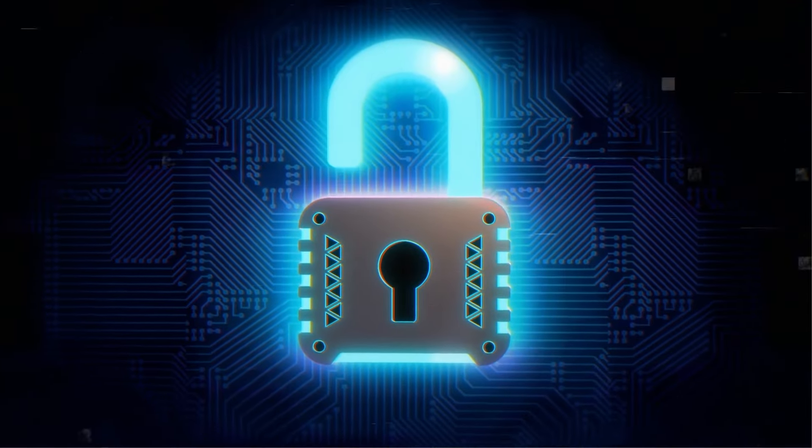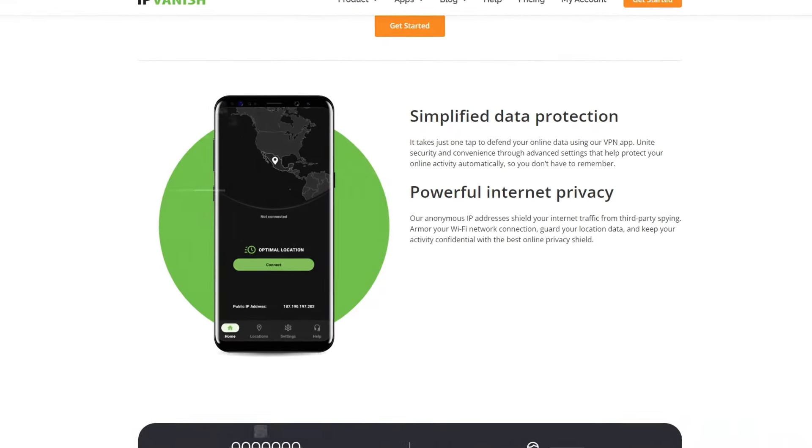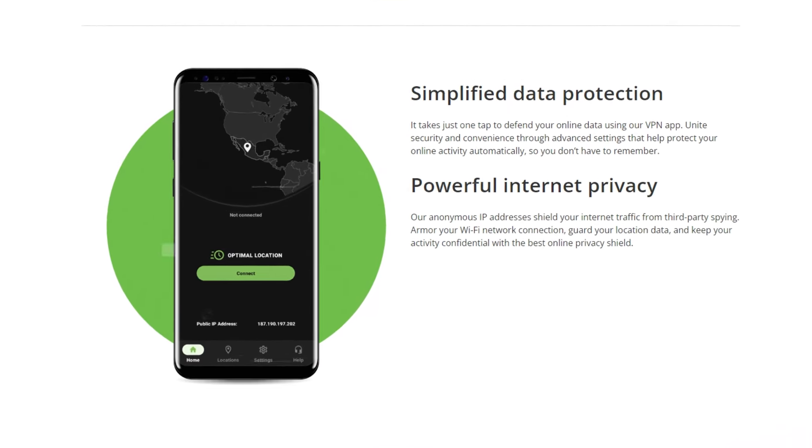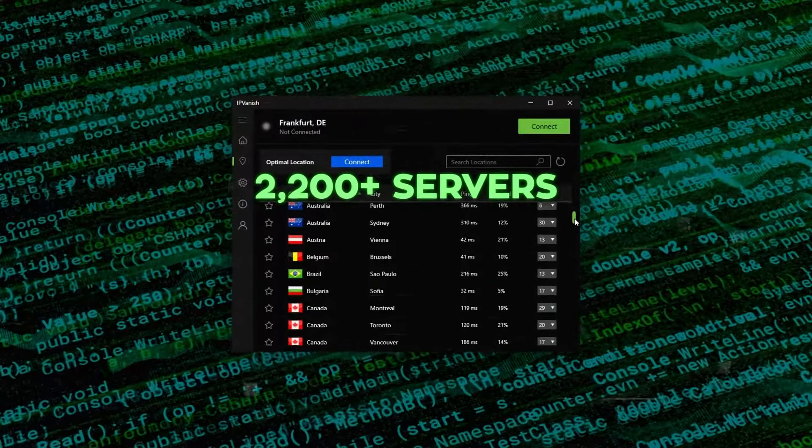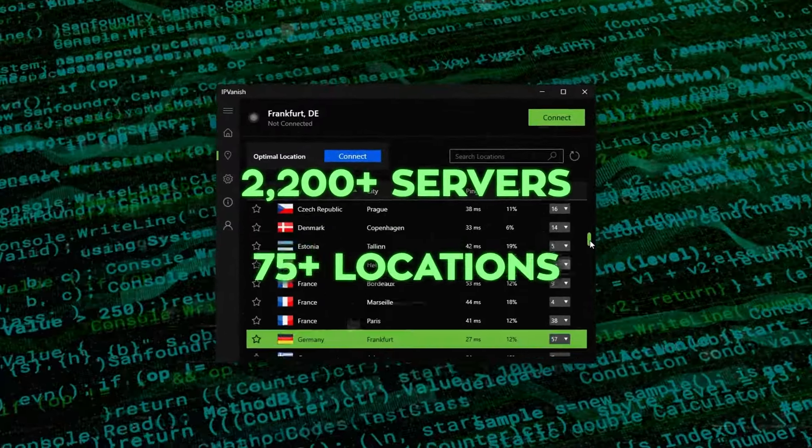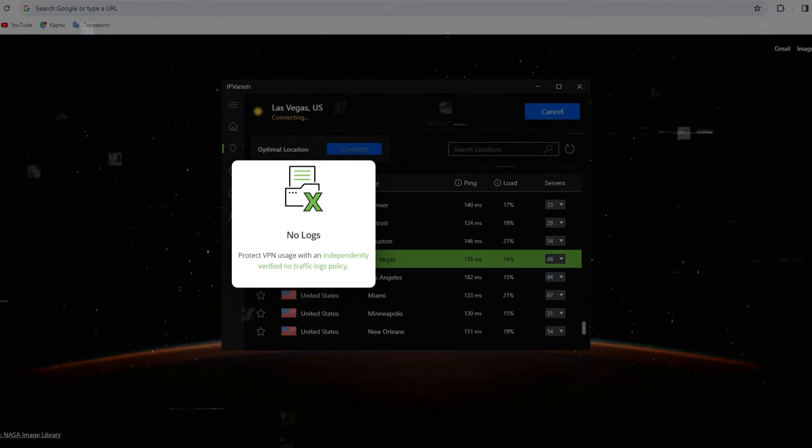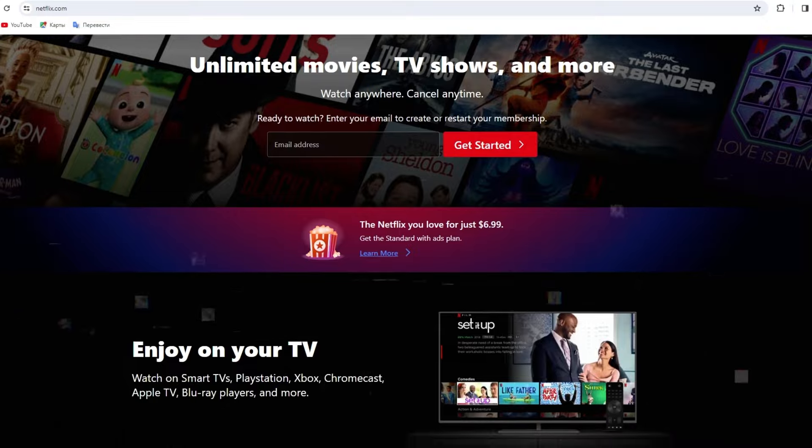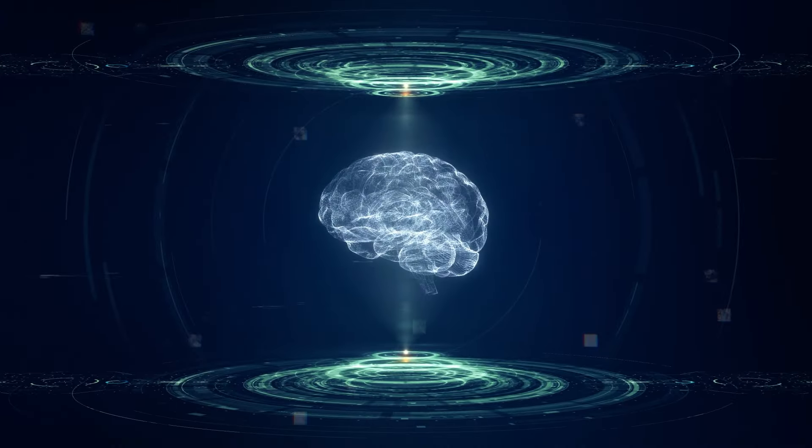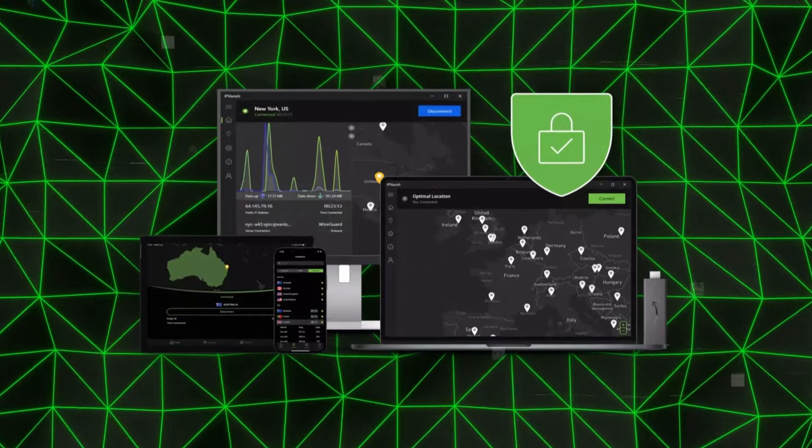It's not just about getting around geoblocks to access content from all over the globe. It's about making a stand for your privacy and safety in a world that's watching more closely than ever. With over 2,200 servers spread out over more than 75 locations worldwide, IPVanish lives up to its promise of keeping no logs and using the strongest encryption out there to keep your online activity under wraps.